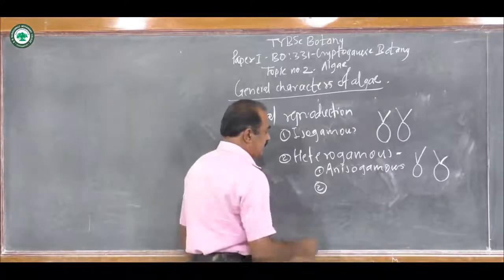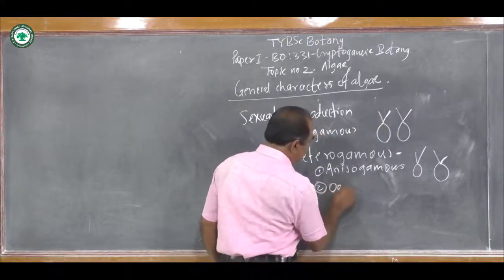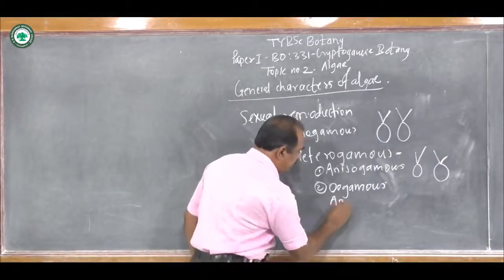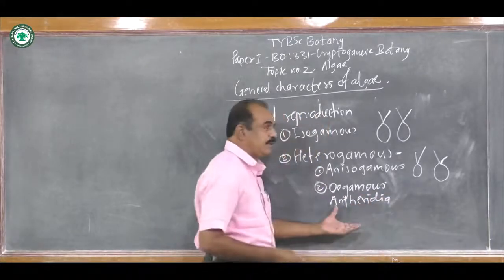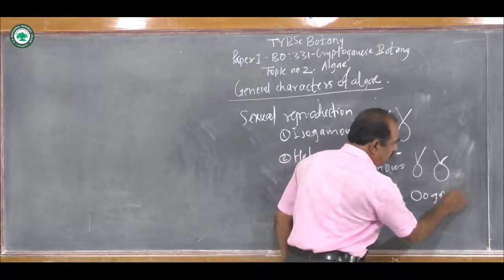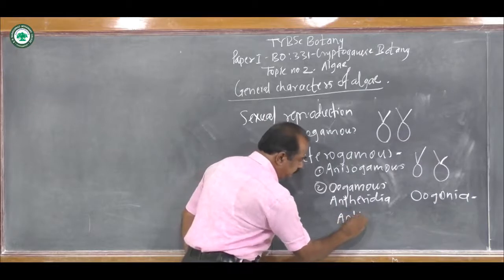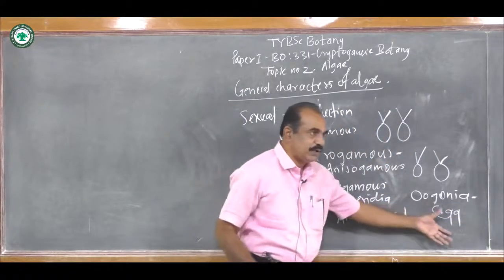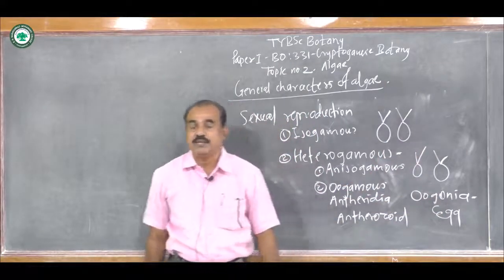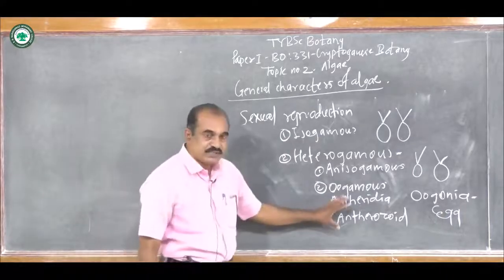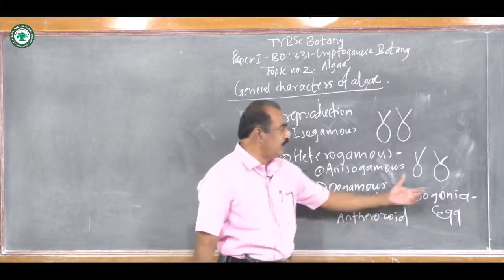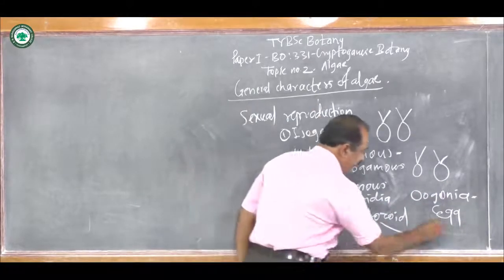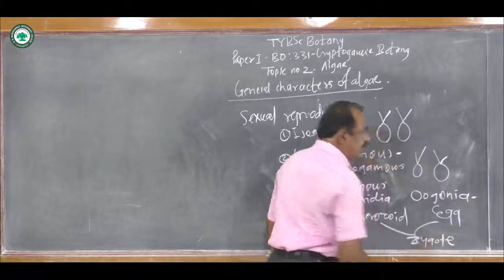In Heterogamous, there is again a different type, that is Oogamous. Here, special reproductive structures are developed — for example, Antheridia, which is the male reproductive structure, and Oogonia, which is the female reproductive structure. Antheridia gives the antherozoid, while Oogonia gives the egg. Antheridia and Oogonia have an outer protective covering and are specially developed reproductive structures. The antherozoid is generally small compared to the egg, which is large, and they unite to form the zygote after fertilization.